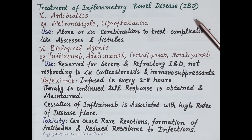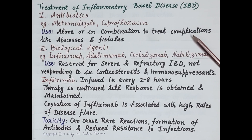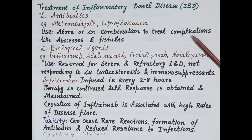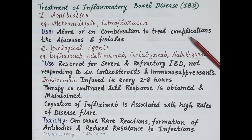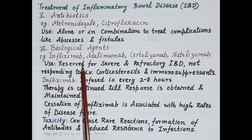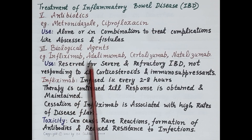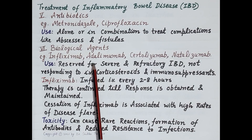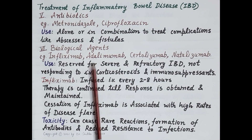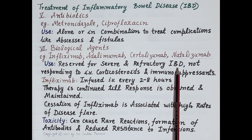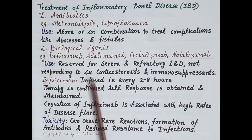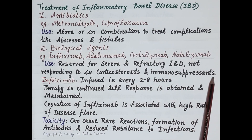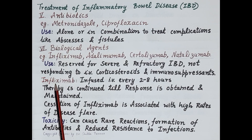Antibiotics like metronidazole and ciprofloxacin are used alone or in combination to treat complications of Crohn's disease such as crypt abscesses and intestinal fistulas. The biological agents — infliximab, adalimumab, certolizumab, and natalizumab — are highly toxic, administered intravenously, and reserved for severe and refractory inflammatory bowel disease not responding to intravenous corticosteroids and immunosuppressants.